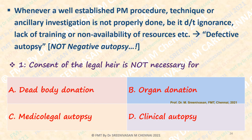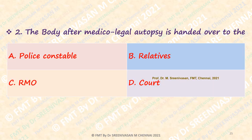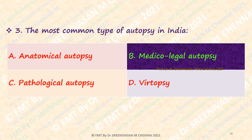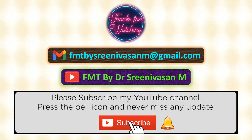Let us try some MCQs. Consent of the legal heir is not necessary for: dead body donation, anatomical autopsy, medical-legal autopsy, or clinical autopsy? — The answer is medical-legal autopsy. To whom is the body handed over after medical-legal autopsy? Police constable, relatives, RMO, or court? — It has to be handed over to the investigating officer or police constable in charge of the deceased body. In case of pathological autopsy, the body is handed over to the relatives. The most common type of autopsy in India is medical-legal autopsy. Thank you friends, we will meet in the next session with another topic.